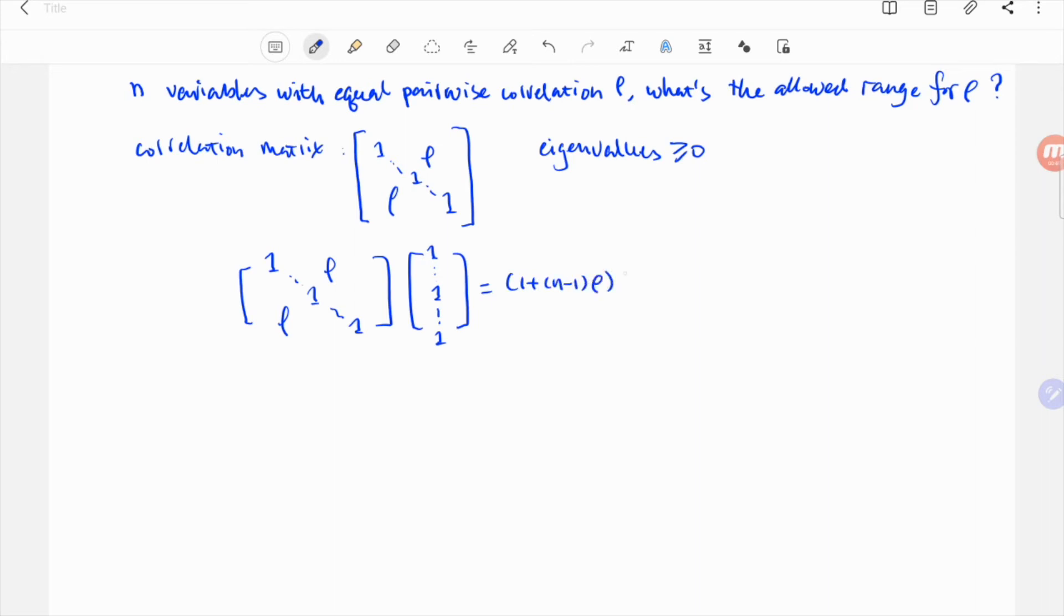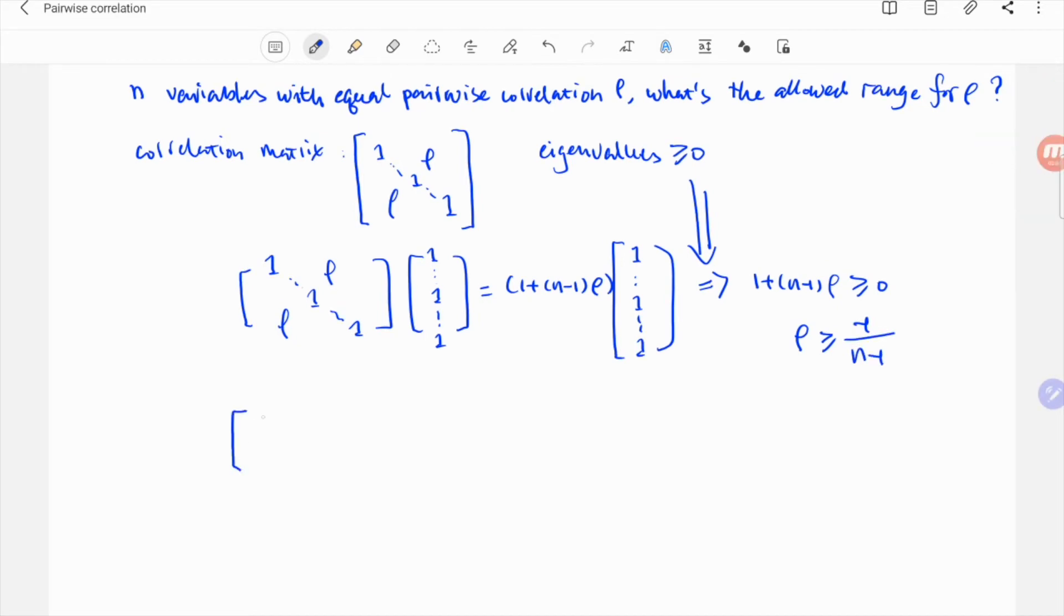Multiply it by the correlation matrix, we see the eigenvalue is 1 plus n minus 1 times rho, and it needs to be non-negative. So rho needs to be larger than minus 1 over n minus 1. So interestingly, it can be negative.